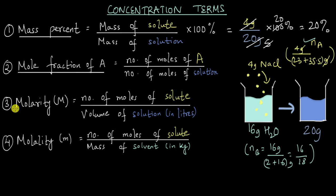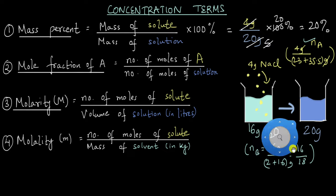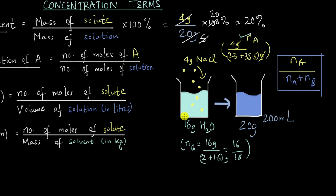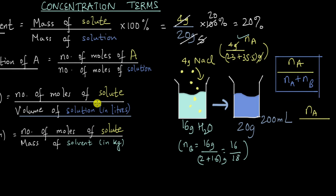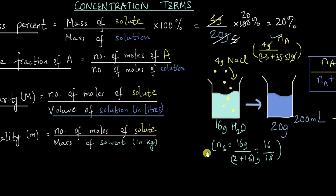The third term is molarity, represented by capital M. The numerator is again the number of moles of solute — Na = 4/58.5 — divided by the volume of the solution in liters. We don't know the volume here, so let's say the volume is 200 mL. The molarity would be Na divided by 200 mL — but remember, the volume must be in liters, so we write 0.2 L. This gives us the molarity of the solution.